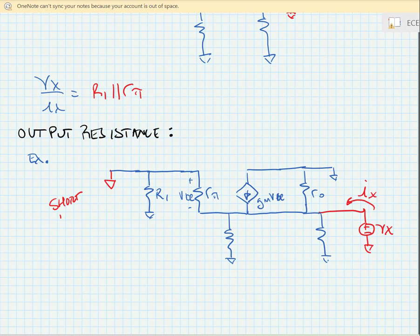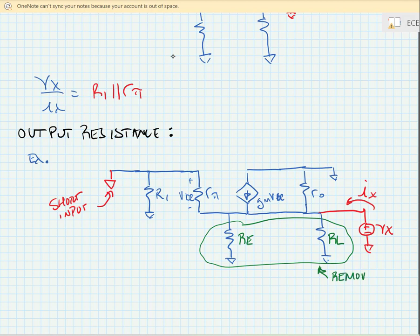Now, this analysis is a bit tricky if we leave the resistors RE and R sub L in the circuit. So what we're going to do is virtually remove those for the time being, and we're going to place them in parallel with the final answer, since we note that they'll be in parallel with the solution that we're finding.